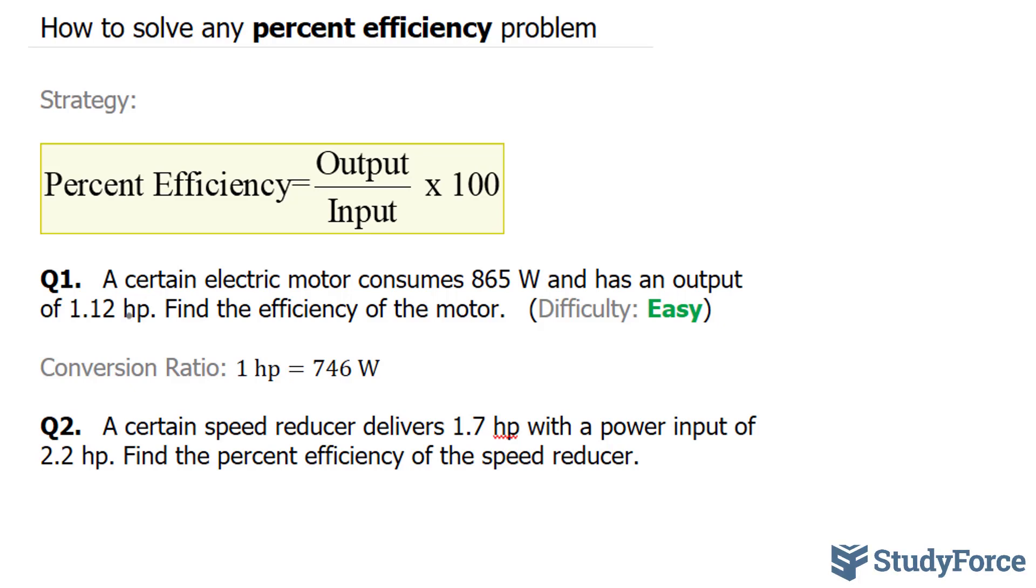So the first thing I'll do is convert 1.12 horsepower into watts. And to do that, I'll use this conversion ratio, and I'll multiply 1.12 horsepower times 746 watts over 1 horsepower.